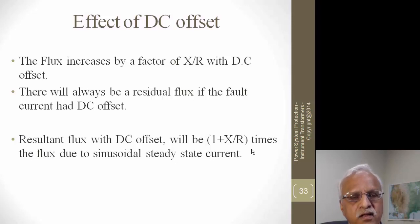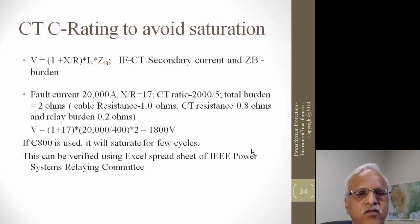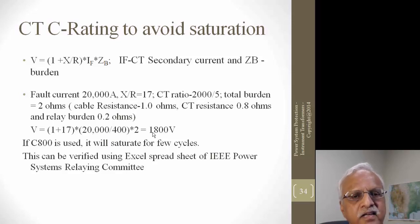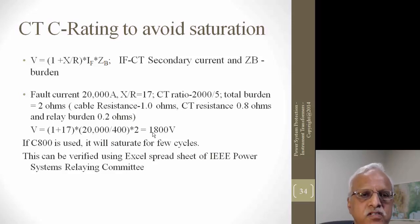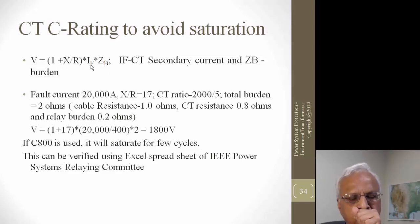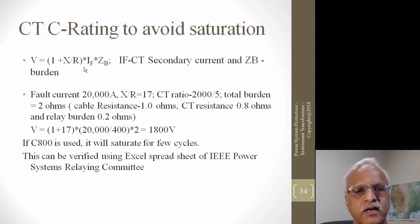As an example: fault current is 20,000 amps, X/R is 17, CT ratio is 2000:5, and the burden (cable resistance plus CT winding) is 2 ohms. The voltage that develops across the secondary is 1800 volts — if the CT is only rated for 800 volts, it saturates within a few power cycles. To avoid saturation, you need the fault current to be less than the C rating divided by the burden times (1 + X/R), or reduce the burden to minimize the likelihood of saturation.